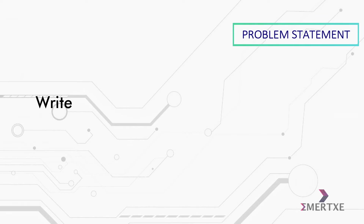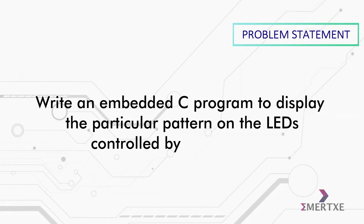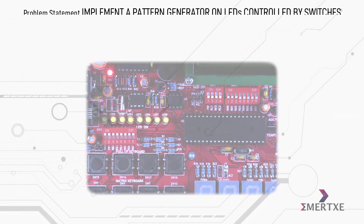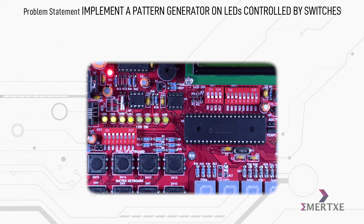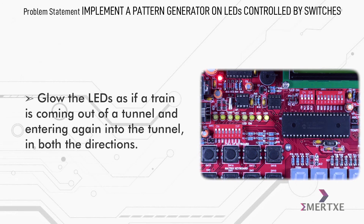In this assignment you have to write an embedded C program to display a particular pattern on the LEDs controlled by the switches. The pattern is similar to the previous assignment — the LEDs have to glow as if a train is coming out of a tunnel and entering again into the tunnel in both directions, i.e., left to right and right to left alternately.